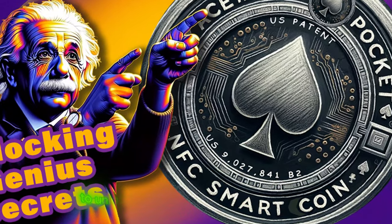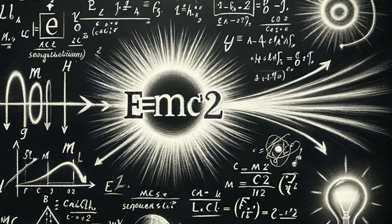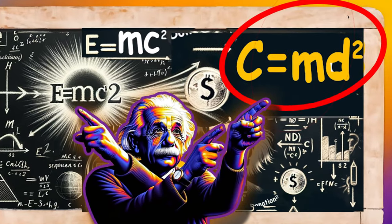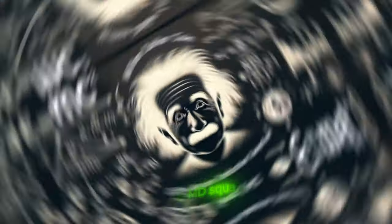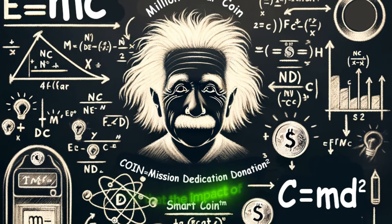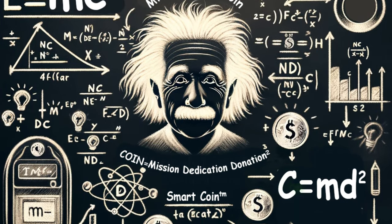The smart coin harnesses the power of something small, much like the mass in E equals mc squared, to unlock a universal potential for nonprofits. The smart coin theory of donor dedication — C equals md squared — illustrates that the impact of a donation is more than just monetary. It's an investment in the mission magnified by the dedication of each donor.